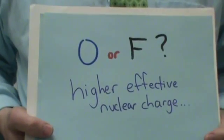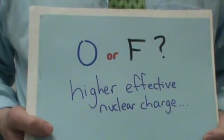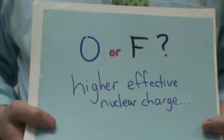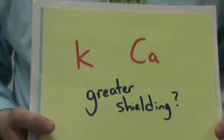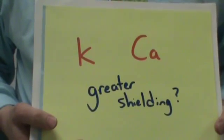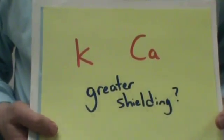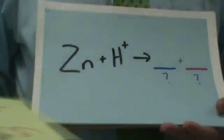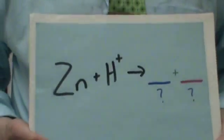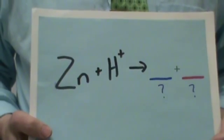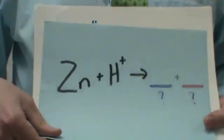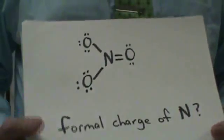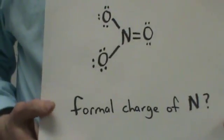Higher effective nuclear charge. Fluorine +7 versus +6. Greater shielding. It would be the same, close enough to the same.